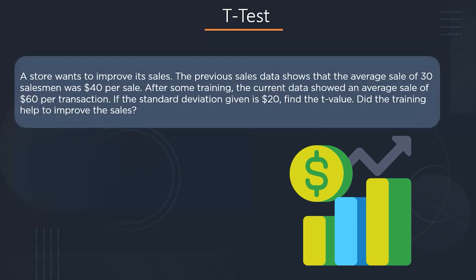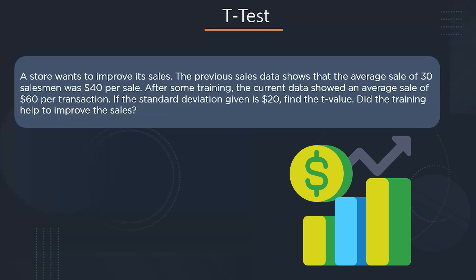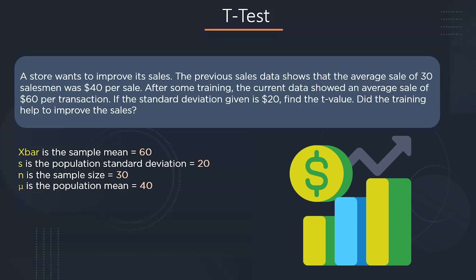Let's discuss with the help of an example. Suppose a store wants to improve its sales. The previous sales data shows an average sale of $40 per transaction. After some corporate training, the current data showed an average sale of $60 per transaction. If the standard deviation is $20, we have to calculate a T-value and determine whether the training improved the sales. We have sample mean = 60, standard deviation = 20, sample size = 30, and population mean = 40. Putting all values into the formula gives a T-value of 5.47.